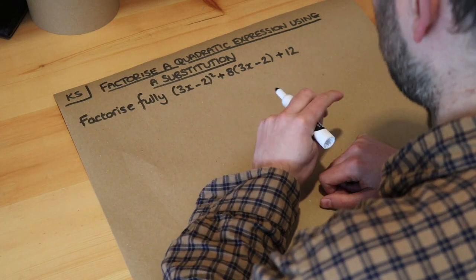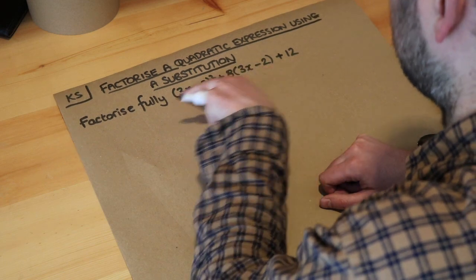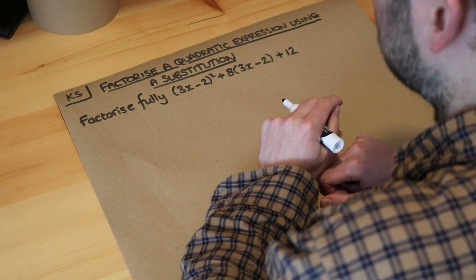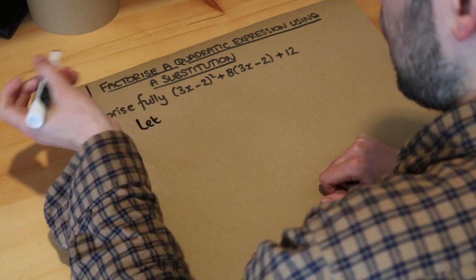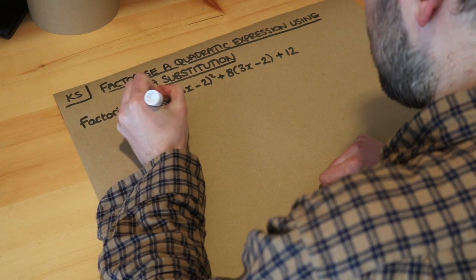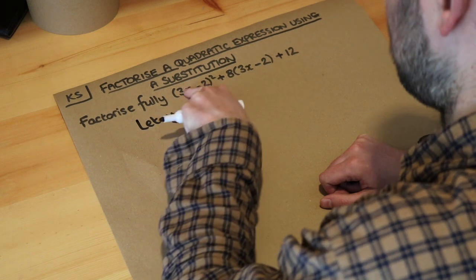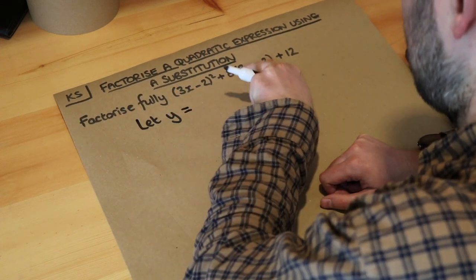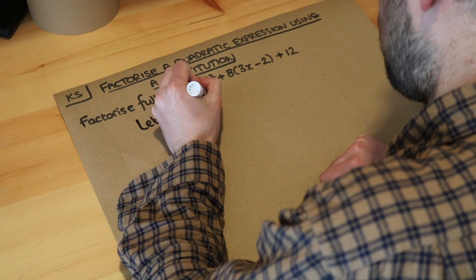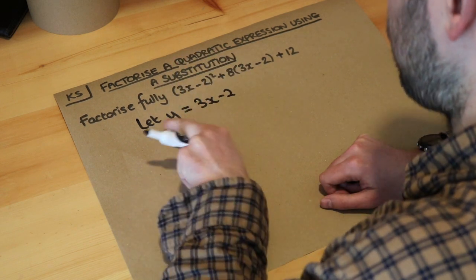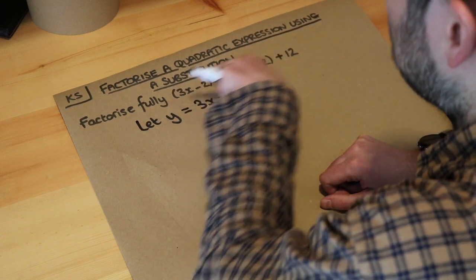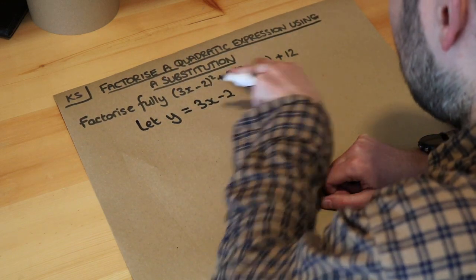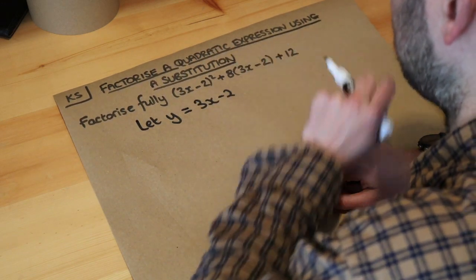Now one approach we could use for this kind of question is if we have that same expression in the bracket we can make a substitution. So let's let some other variable, let's say y as long as it's not reusing that x because we've already used x, be equal to that bracketed expression. And the idea is now when we substitute this in, the y in it's going to give you a simple expression in terms of y because these are both the same thing so they'll both be replaced with y.